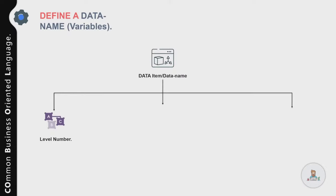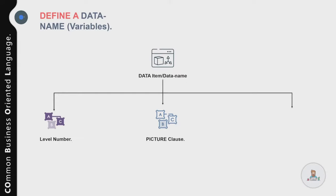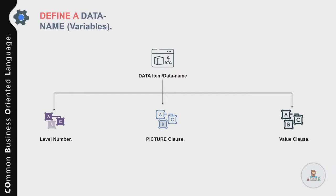To define a variable you need three important things: first, a level number to specify the hierarchy of individual items in a group variable; second, the variable name itself; and third, a picture clause to define the type of data you will be storing in that variable. You also need a value clause to specify the initial value to assign to that variable.